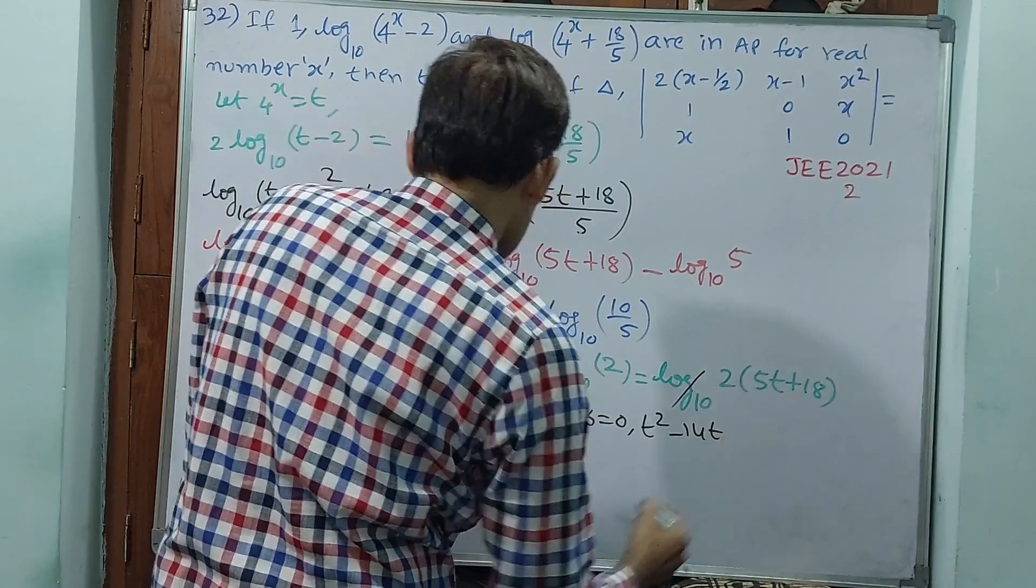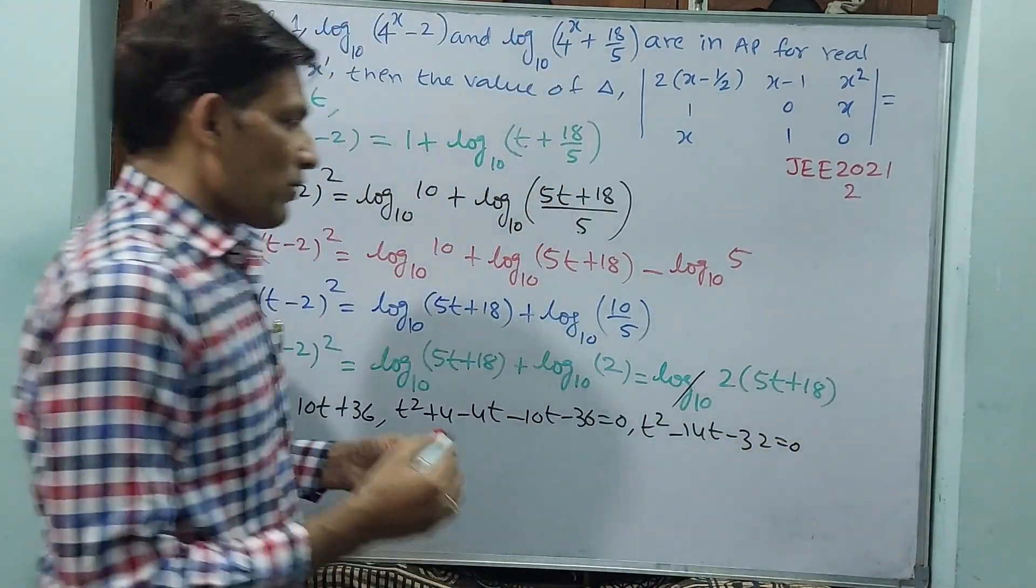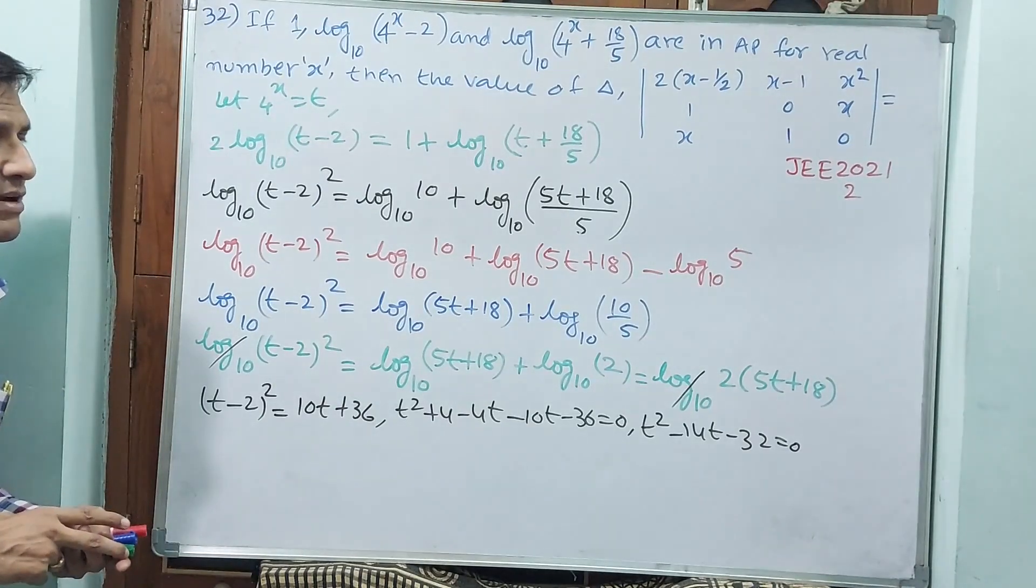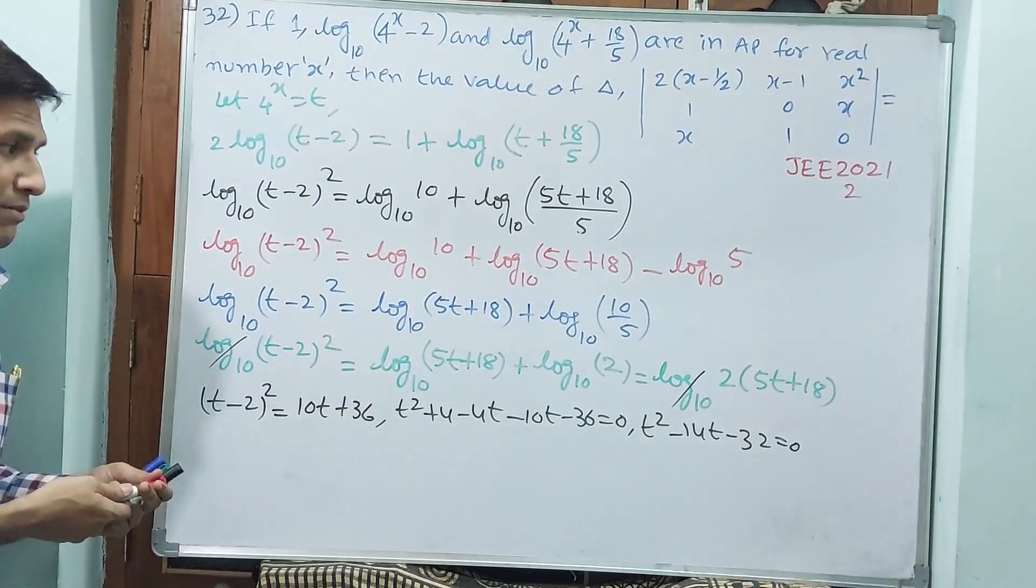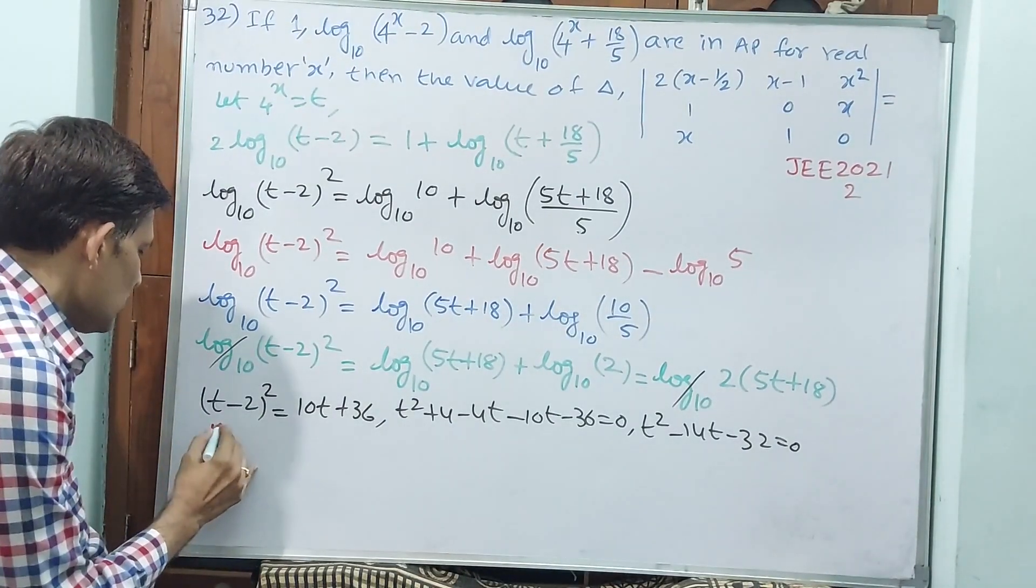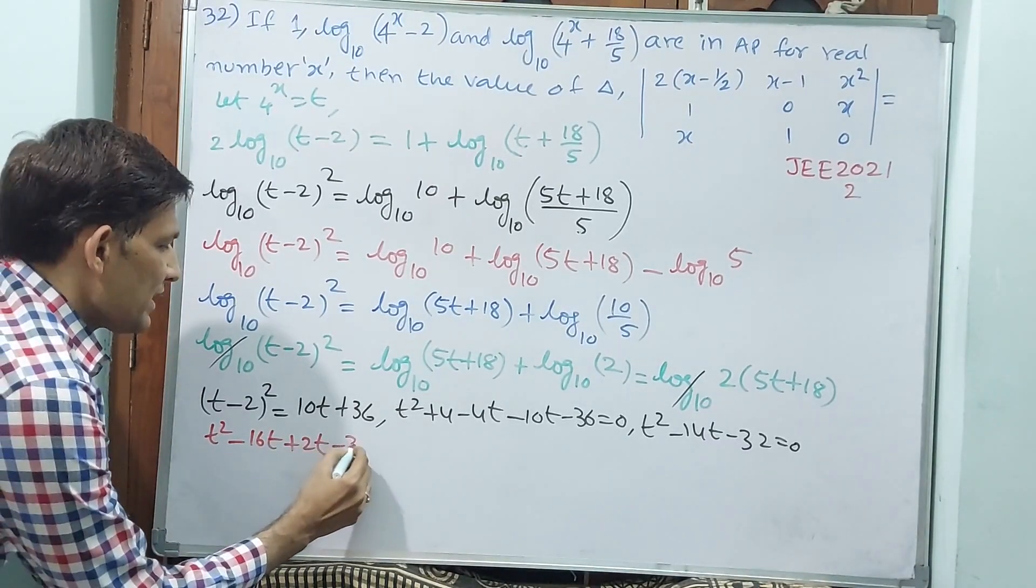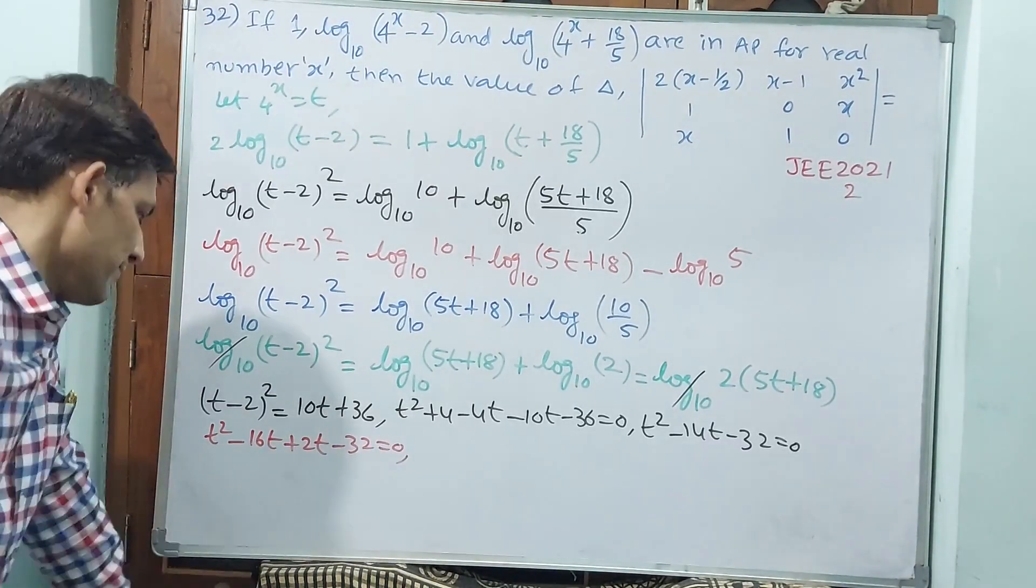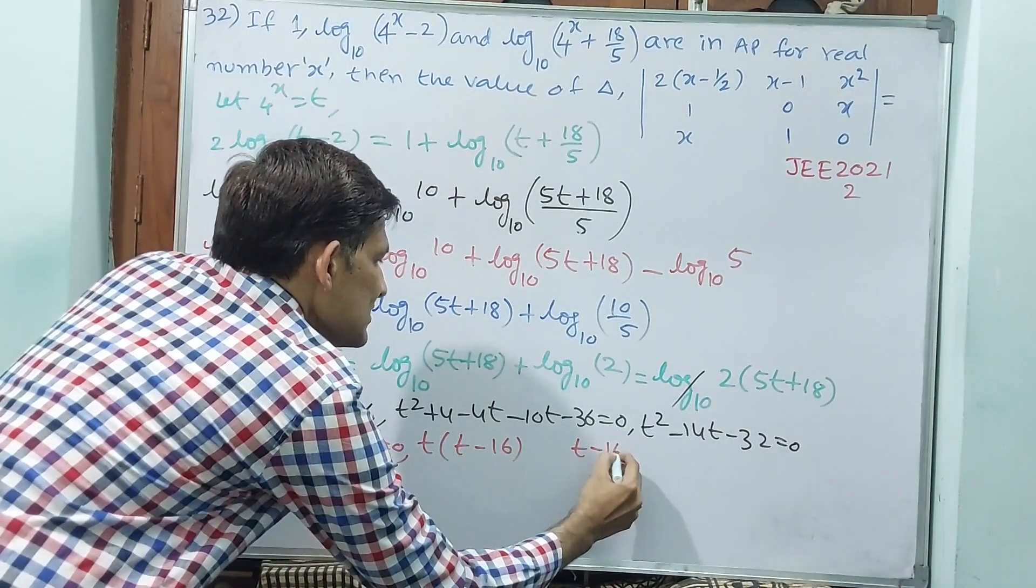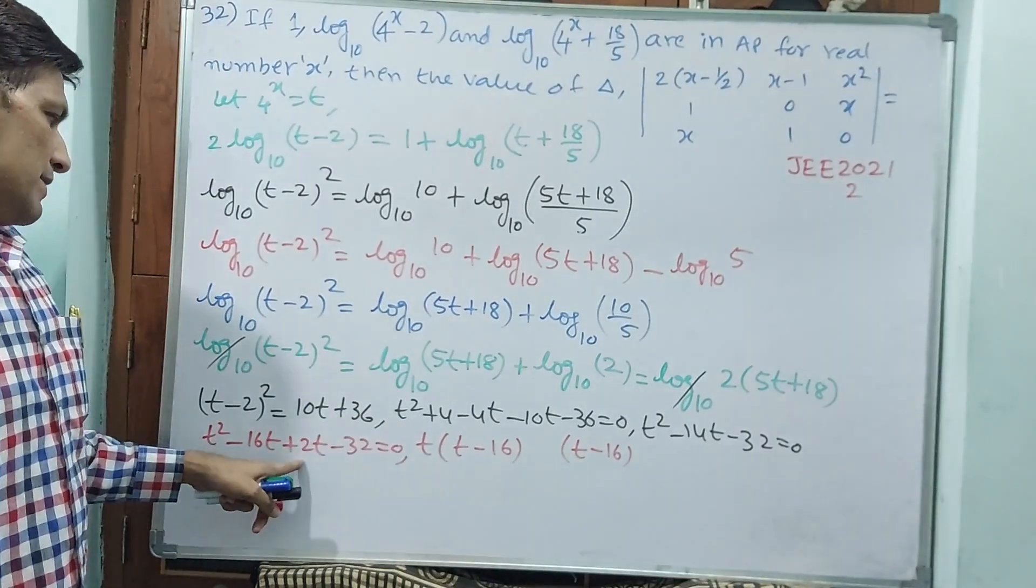See, 14 and 32 has to come. 16. Those are 13, 16 minus 2 is 14. Okay, now see, -16 and +2. Write on: see, t² - 16t + 2t - 32 = 0. t, if I dare comment, t - 16.